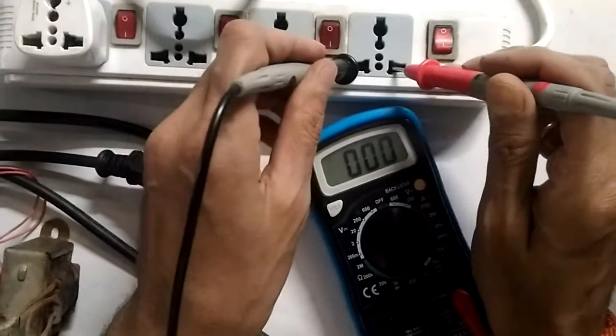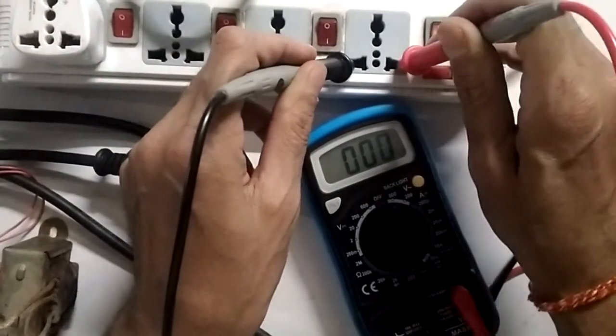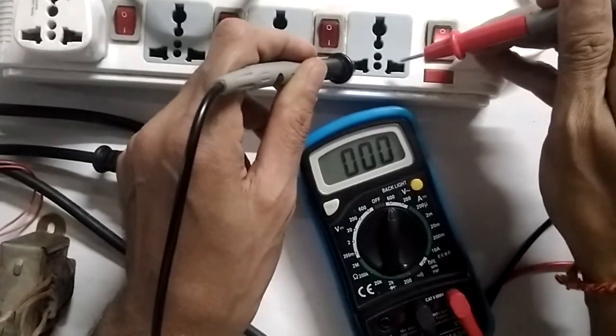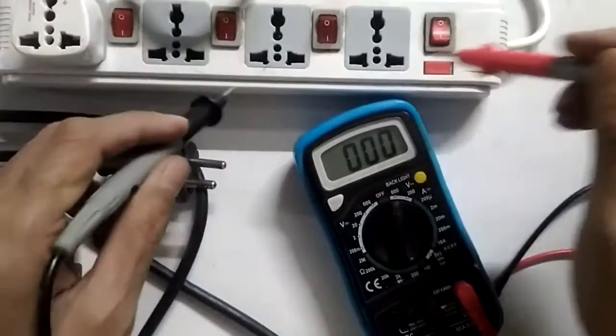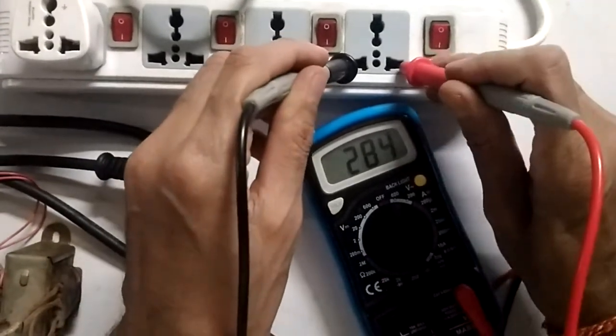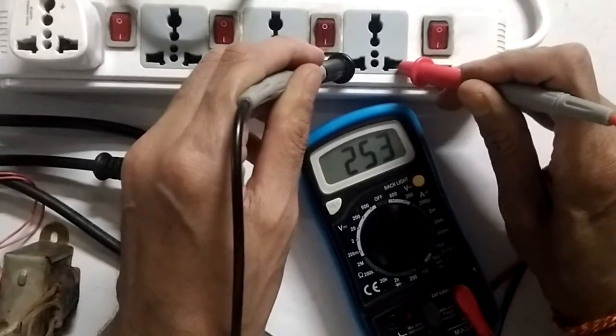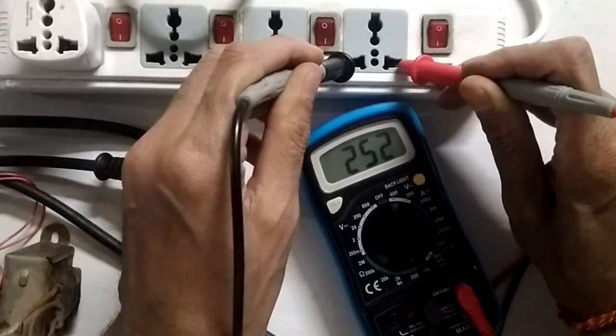So here you can see, no power on this. Okay, switch was off. Okay, so we're getting around 253 volts, 252, 253 volts on main supply.